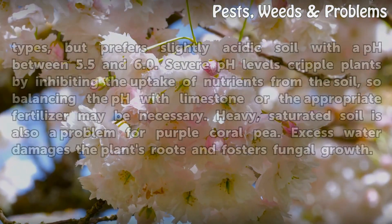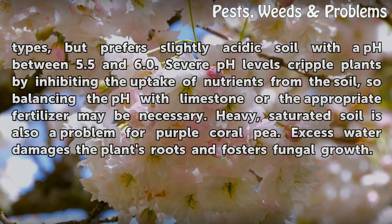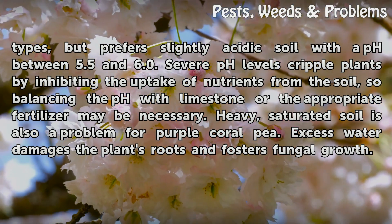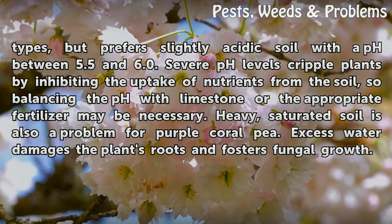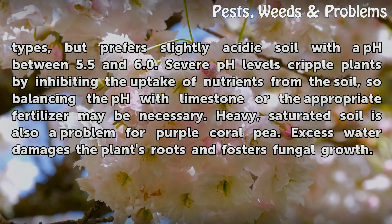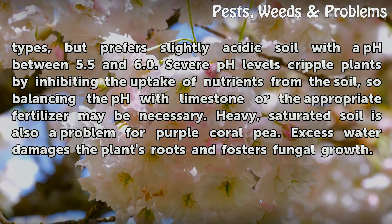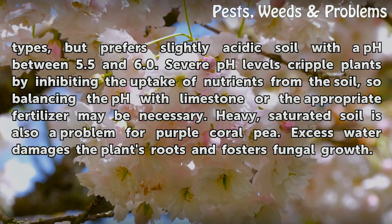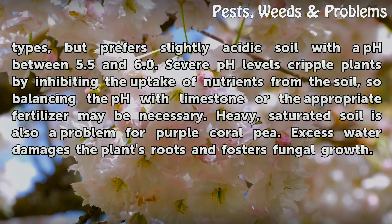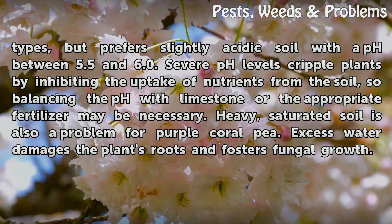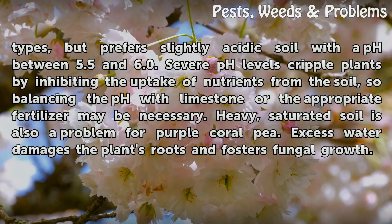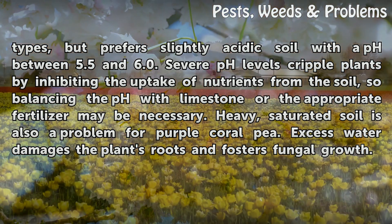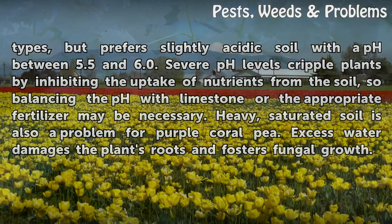Purple coral pea tolerates a range of soil types, but prefers slightly acidic soil with a pH between 5.5 and 6.0. Severe pH levels cripple plants by inhibiting the uptake of nutrients from the soil, so balancing the pH with limestone or the appropriate fertilizer may be necessary. Heavy, saturated soil is also a problem, as excess water damages the plant's roots and fosters fungal growth.